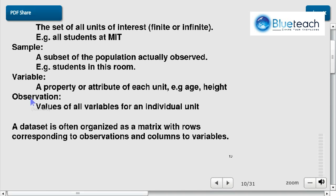And then an observation is the values of all variables for an individual unit. So to summarize, you have the population. A lot of them, right?